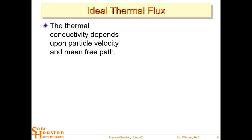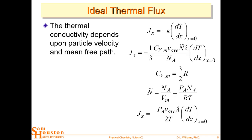The ideal thermal flux depends upon particle velocity and mean free path. In terms of thermal flux, we have our gradient — the change in temperature with respect to x — pointing uphill towards the hot temperature. The flux goes in the opposite direction. The transport coefficient here is the thermal conductivity. It depends upon the heat capacity at constant volume, which we know how to calculate: 3/2 R for a monatomic gas, 5/2 R for diatomic, and so on.